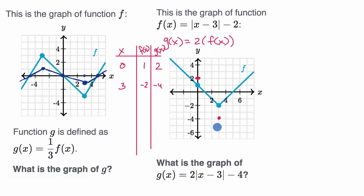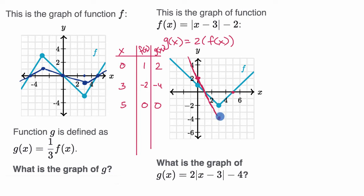f(5) = 0, so g(5) = 2 × 0 = 0 — right over there. The graph is going to look something like this, connecting the dots with straight lines. You can see it's stretched in the vertical direction. If you were doing this on Khan Academy, it'd be multiple choice — you'd look for the graph that looks like that. Let's do a few more examples.